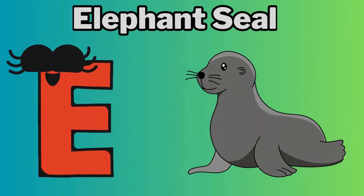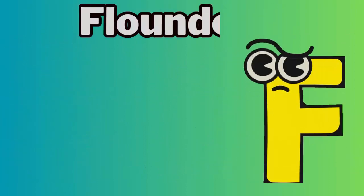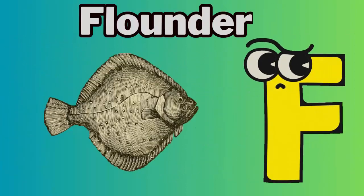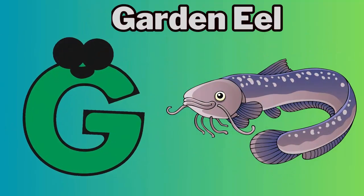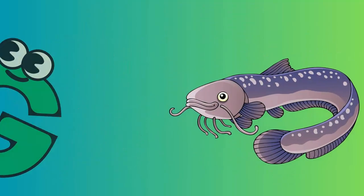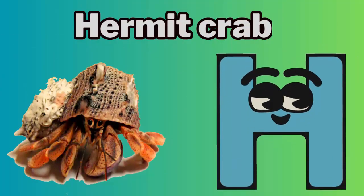E. E for elephant seal. F. F for flounder. G. G for garden eel. H. H for hermit crab.